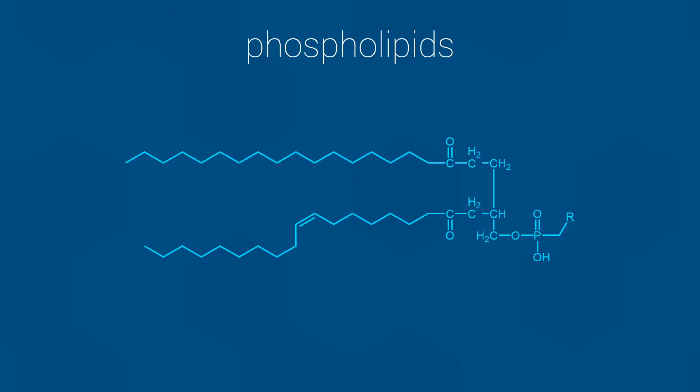The first is a head region that contains a number of polar bonds, and often ionic charges. For this reason, we refer to the head region as the polar head. Attached to the head are two tails that consist entirely of carbon and hydrogen bonds. This makes the tails completely nonpolar, and thus we refer to them as the nonpolar tails.